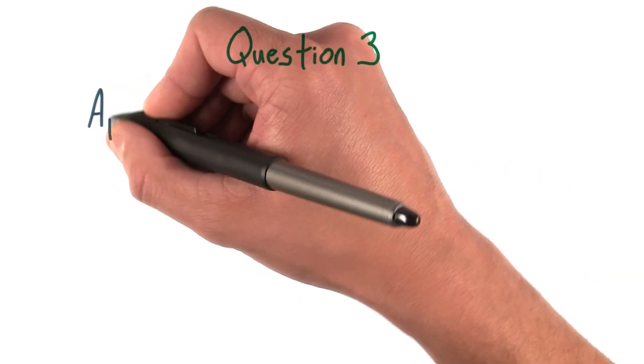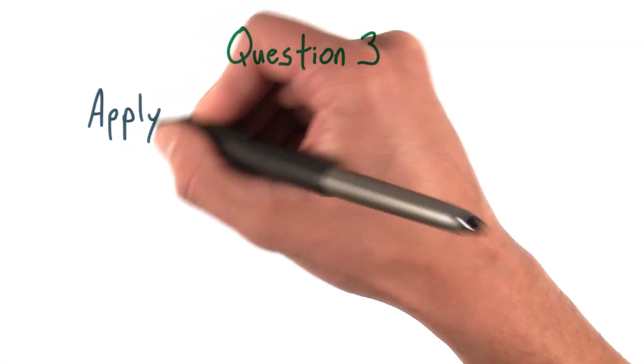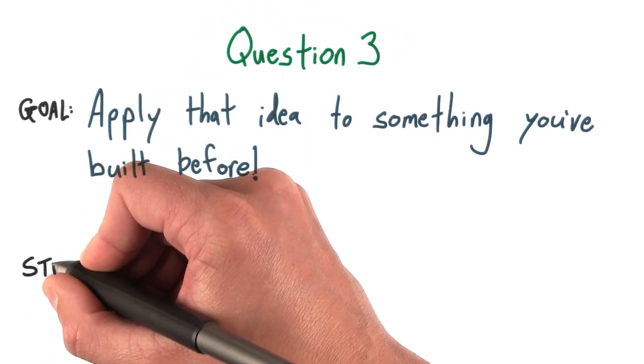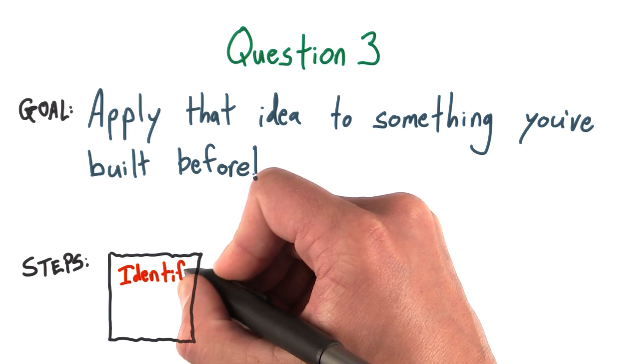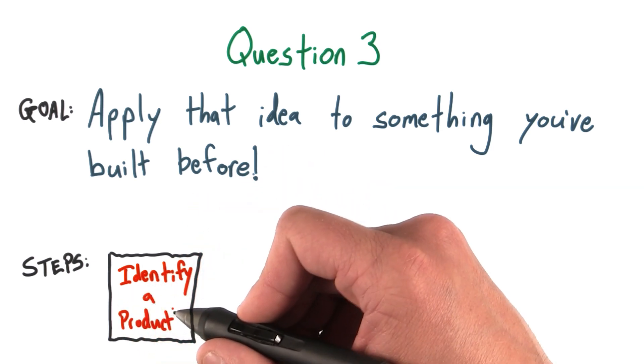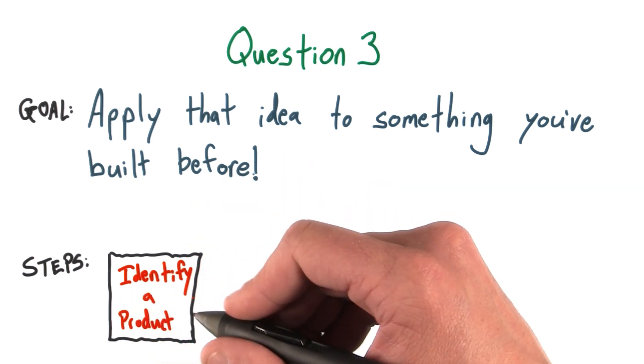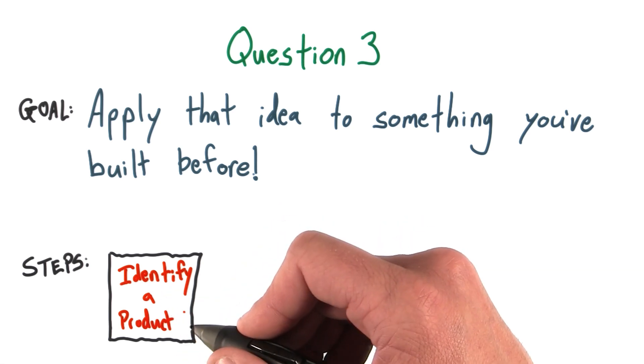Now, you're going to apply that idea to something you've actually built before. And the way you'll do that is first, you'll identify a product. This doesn't necessarily have to be a mobile app or even an app at all. It should just be some product that you've worked on in the past.